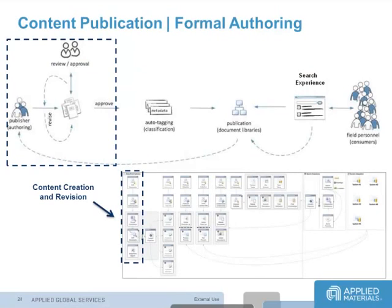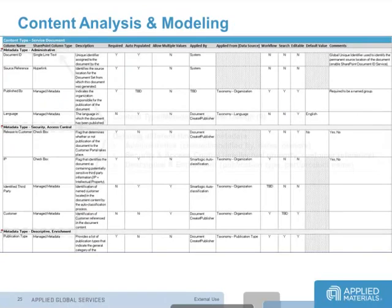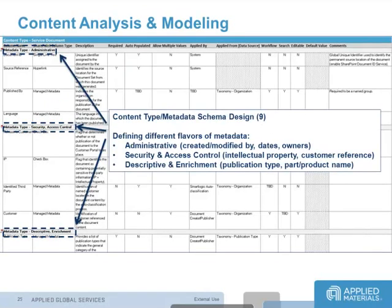The formal authoring process that our engineers go through when releasing a new product is very standard — there's a revision cycle and an approval cycle, all handled in SharePoint, and we didn't see much need to go outside of standard SharePoint workflows for that. We did a lot of work on content analysis and modeling. Early and Associates helped out tremendously with all of this process, helping us figure out the best design for our content types and what kind of metadata we needed. We basically boiled it into three sections — administrative, security, and descriptive. The security access control is extraordinarily important in our company, and descriptive we already had a good idea of what we needed.